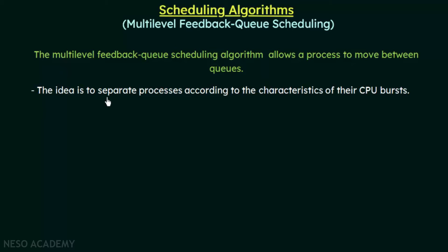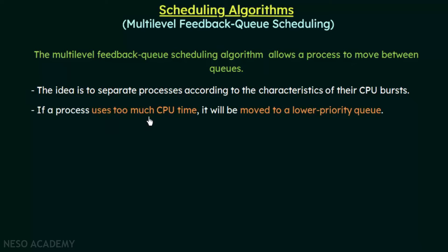The idea here is to separate processes according to the characteristics of their CPU burst. Different processes will have different characteristics of their CPU burst — some may take longer time, some may take lesser time. Depending upon these characteristics, we are going to separate the processes and allow them to move between certain queues. If a process uses too much of the CPU time, it will be moved to a lower priority queue.